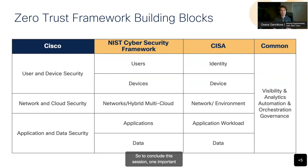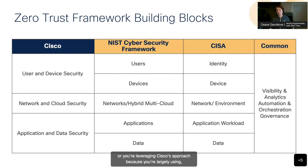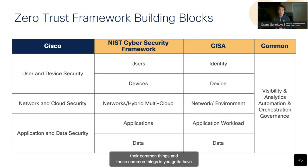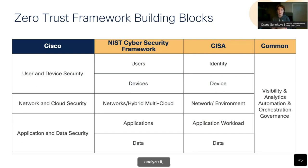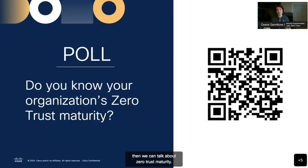To conclude this section: regardless of the framework you're relying on — whether it's NIST, CISA, or Cisco's approach — there are common themes. You've got to have visibility, shared context to analyze it, and you have to use automation and orchestration to get to zero trust outcomes. All of that brings us to the point where we can talk about zero trust maturity.